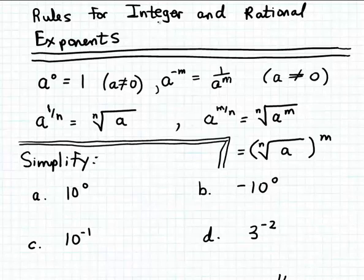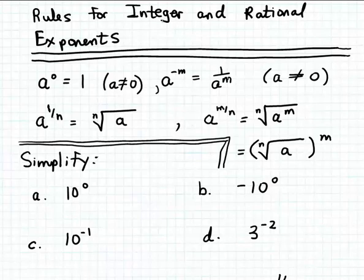In this video we're going to consider simplifying powers where the exponent is an integer. Recall that an integer can be a positive whole number like one, two, or three — the counting numbers or natural numbers. But integers can also include zero and the negatives of the positive whole numbers, like minus three, minus two, minus one.